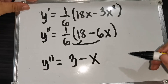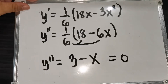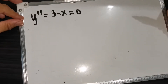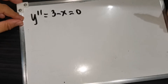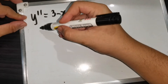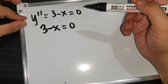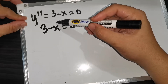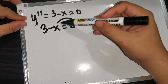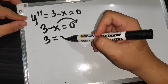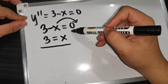We always assume the second derivative equals zero. Since y'' = 3 - x, we set 3 - x = 0. Transferring -x to the other side, we get x = 3. So the x-coordinate of the potential point of inflection is x = 3.